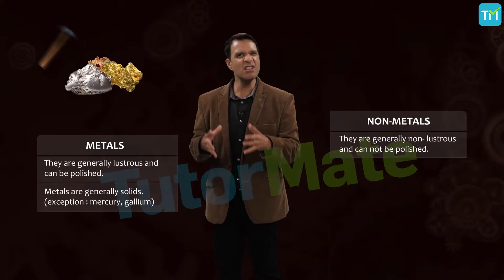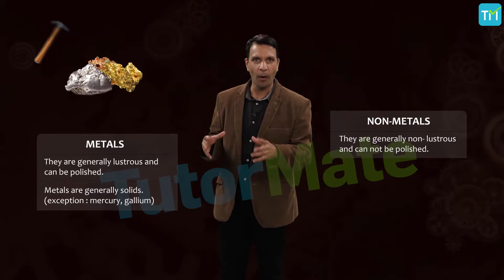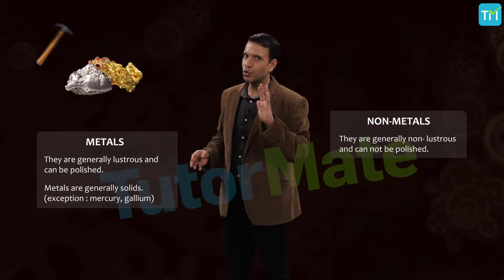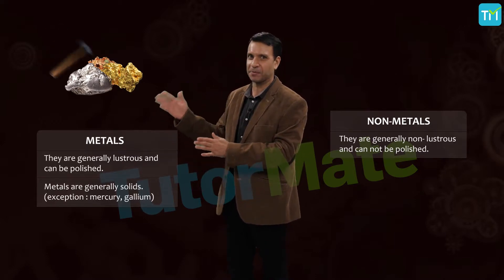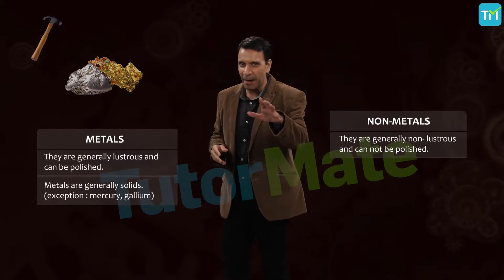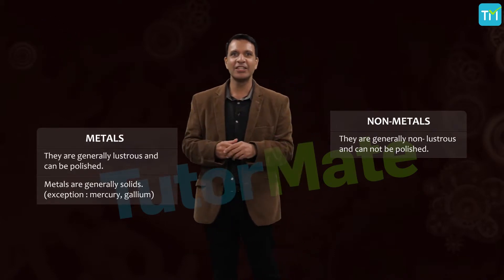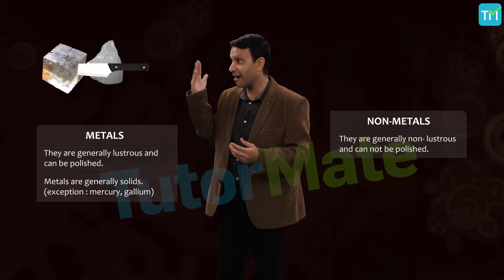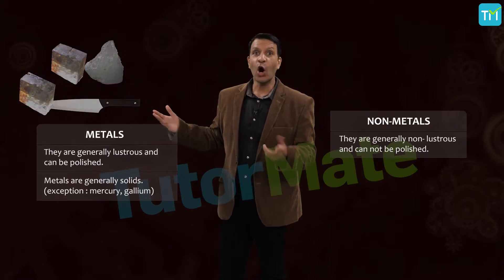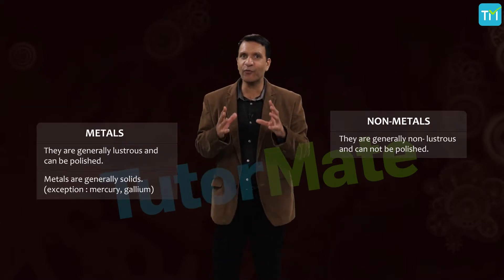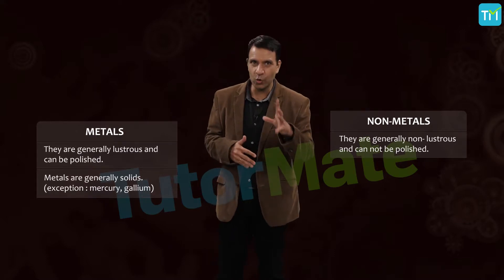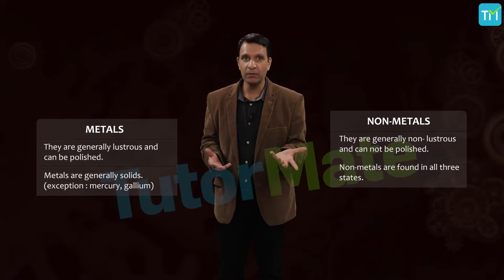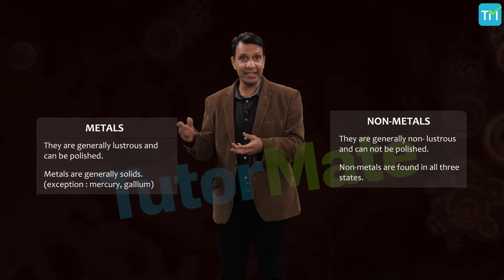Metals are really hard and found in solid forms. However, there are exceptions — alkali metals like sodium and potassium can be simply cut with a knife. Also, mercury is found in liquid form at room temperature. Non-metals are found in different forms — for example, oxygen is a non-metal in the gaseous state, and bromine is in the liquid state at room temperature.